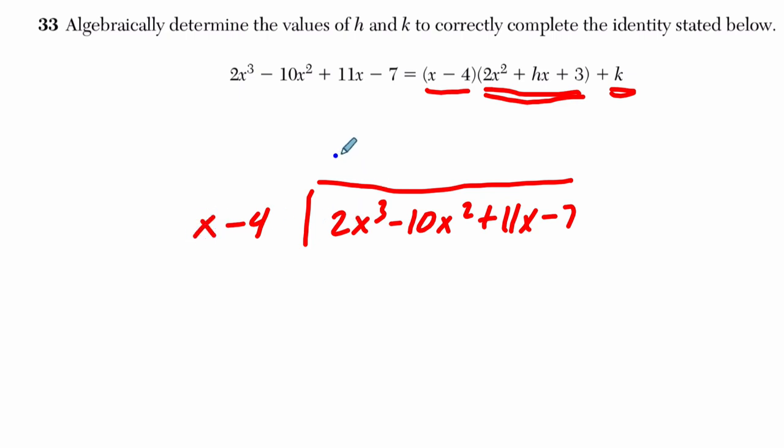So, to do the long division, we say how many times does x go into 2x cubed? That's 2x squared, and then we do 2x squared times x minus 4. What do we get? 2x cubed minus 8x squared, subtract these out. We get negative 10, these cancel the 2x cubes, they're the same. And then we have negative 10x squared minus negative 8x squared, so that's negative 10 plus 8x squared, which is negative 2x squared. And then we bring down the 11x.